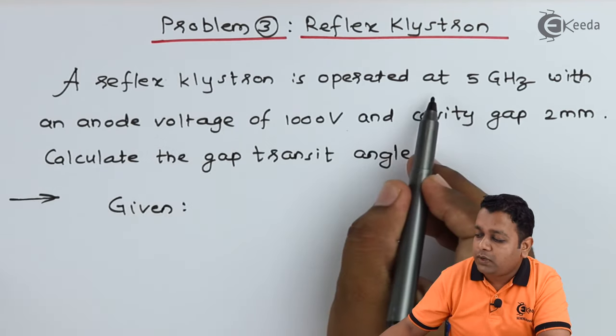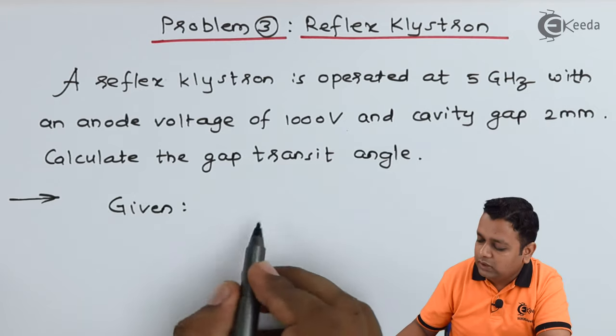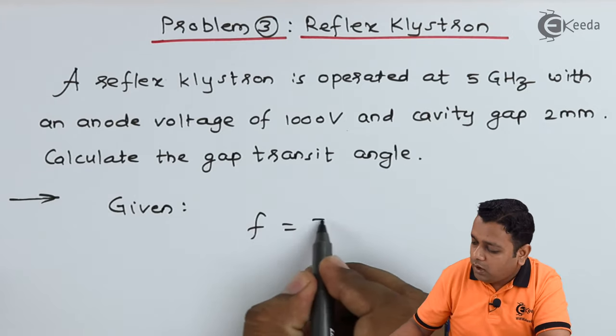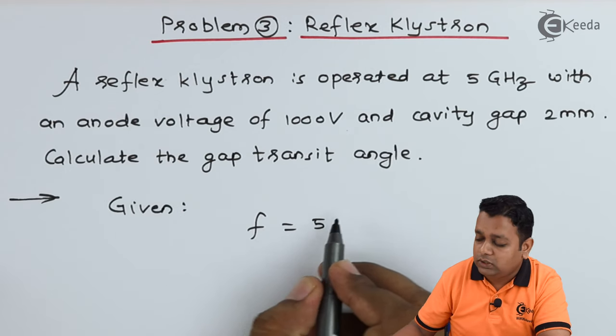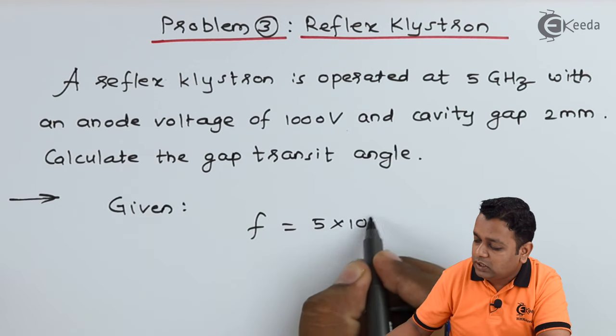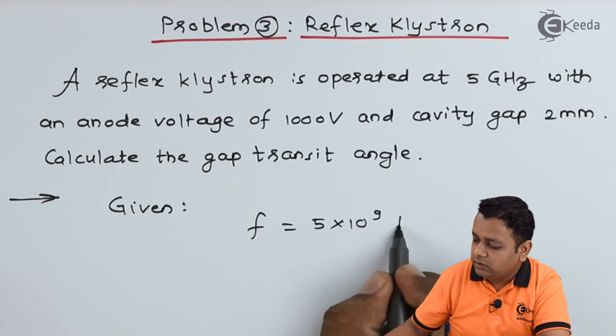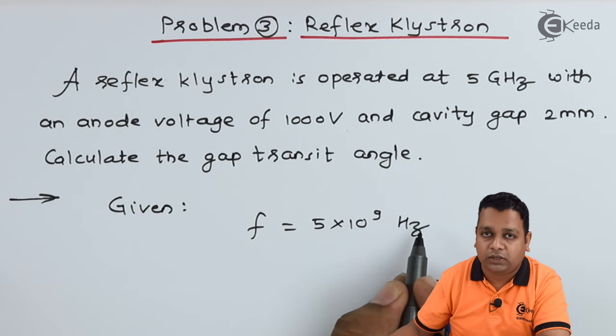As the reflex klystron is operated at 5 GHz, the frequency can be denoted f = 5 GHz. So GHz can be represented as 10 to power 9 in multiplication to this 5, simply we write Hertz after it. So this is the first value to be used here.